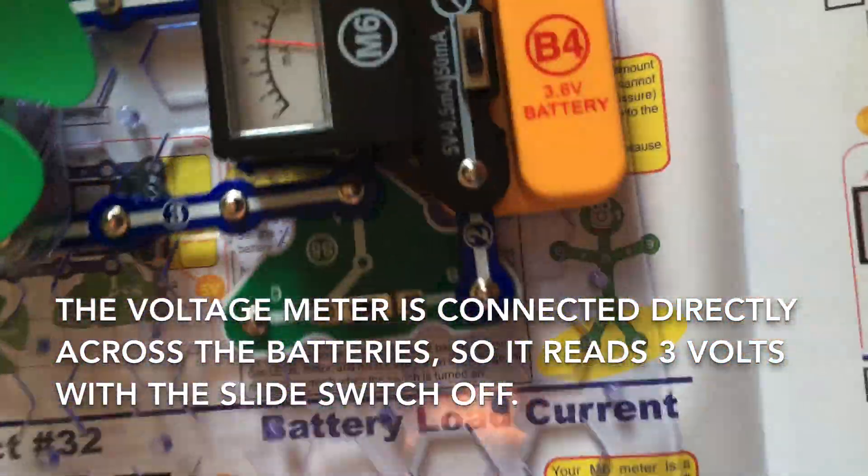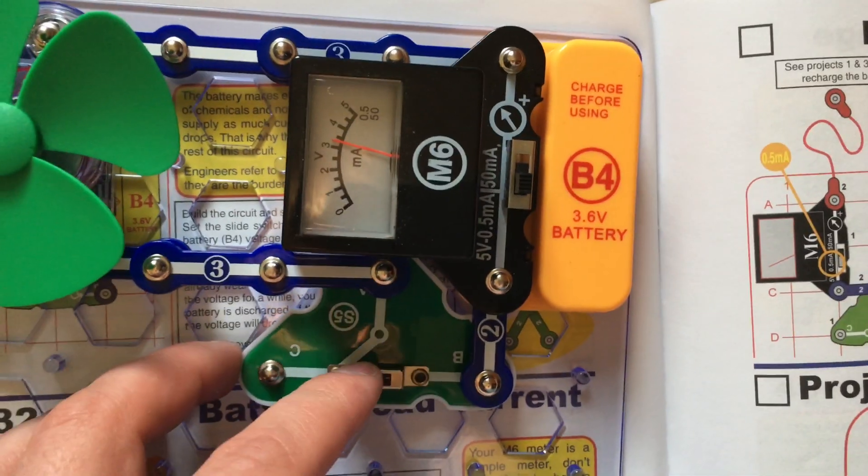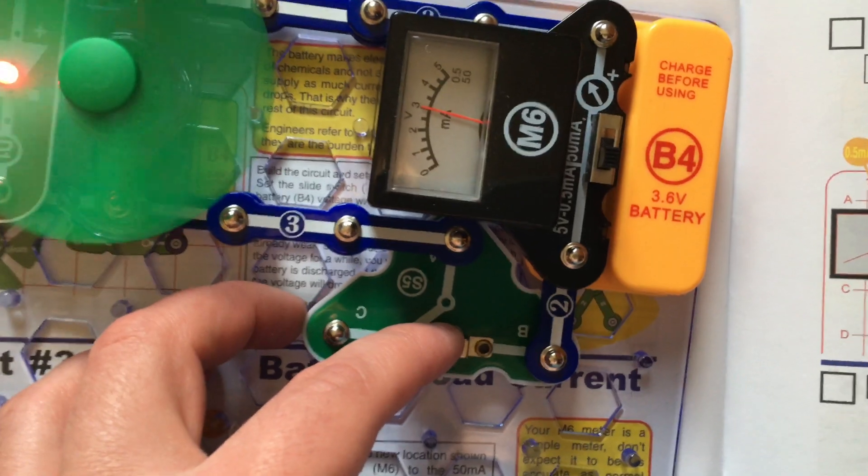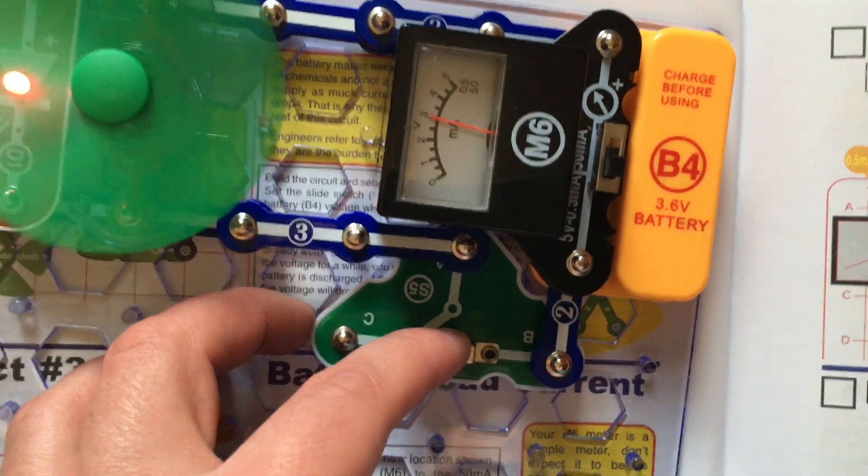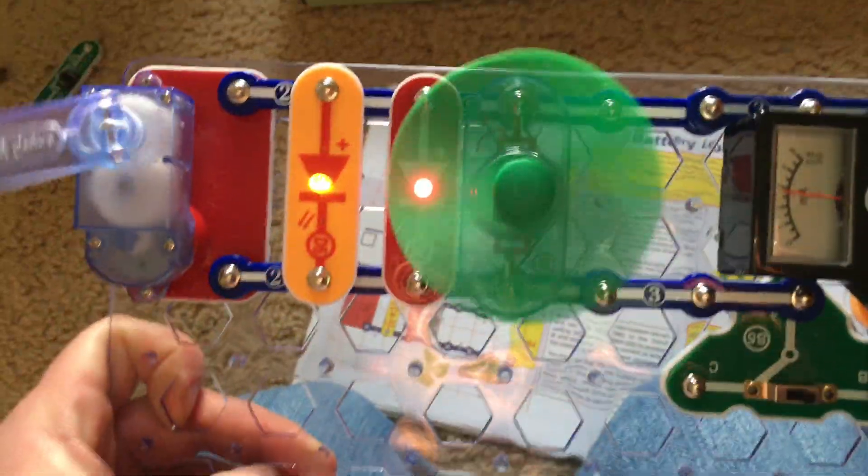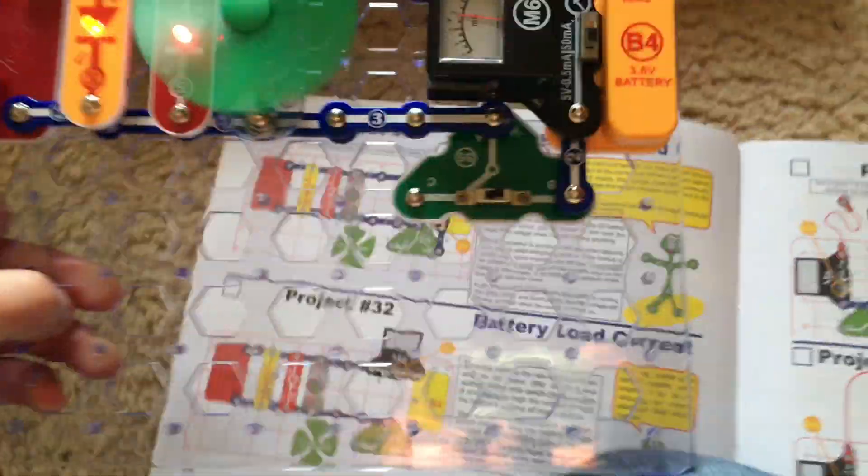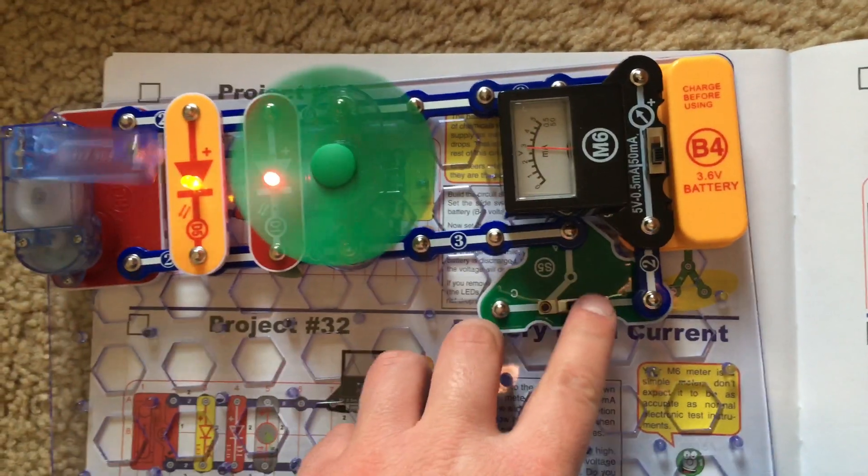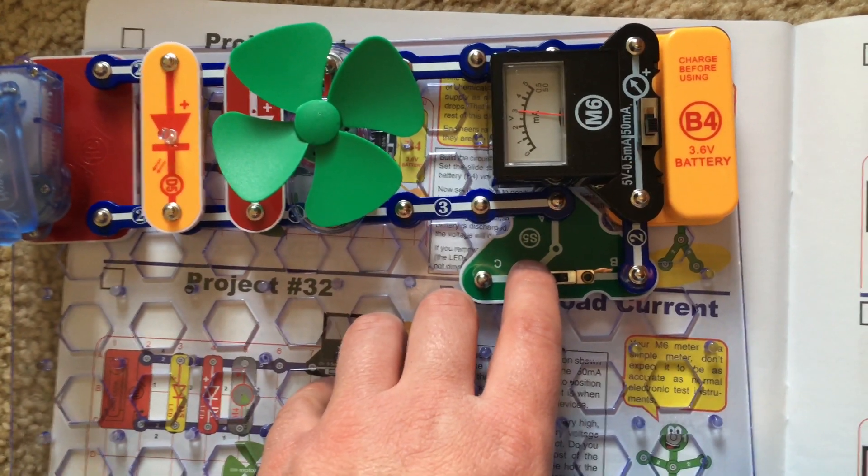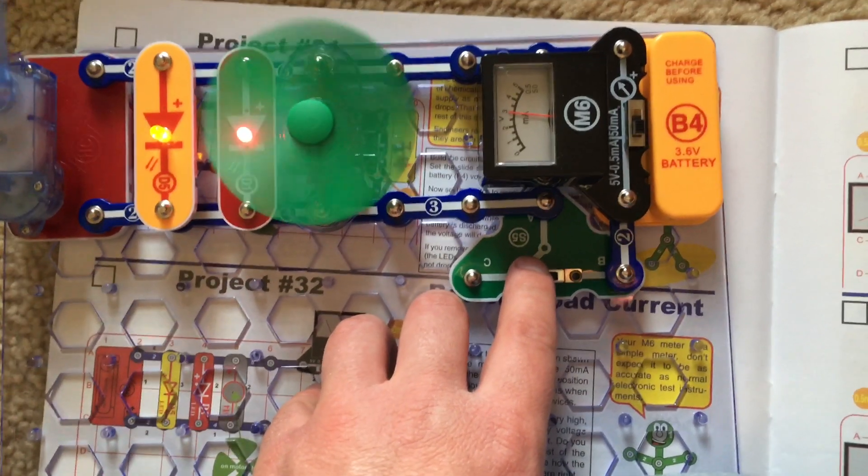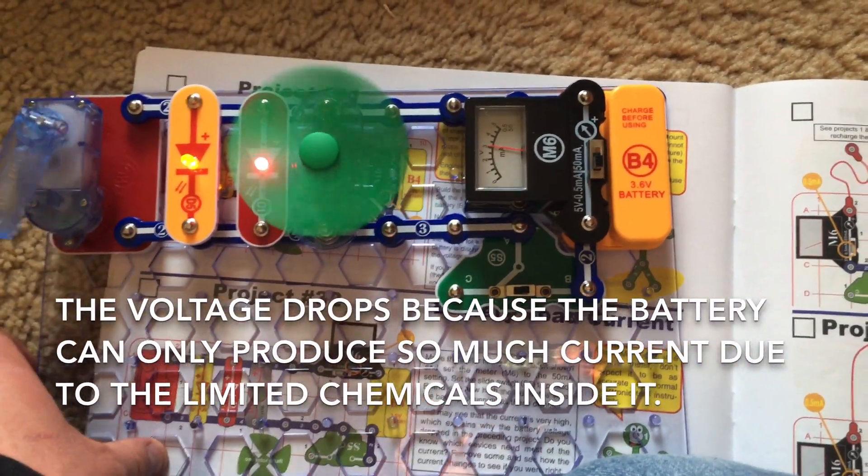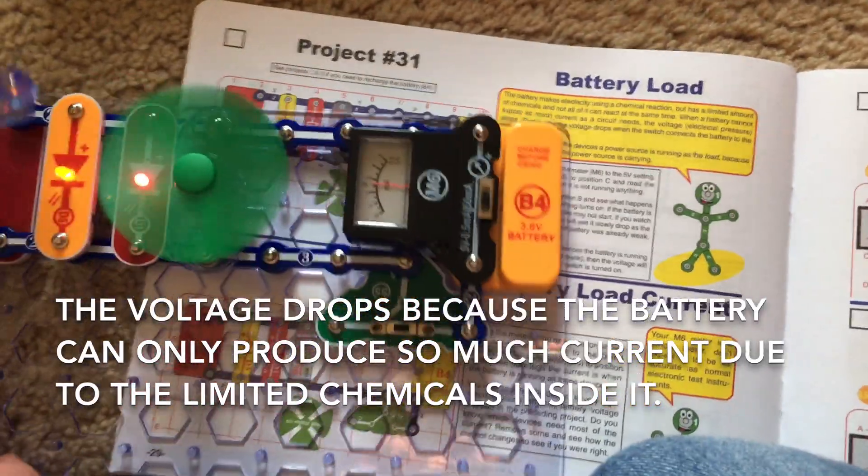Now I'm going to move the slide switch to the B position and note that the voltage drops a little bit. It's now about 3 volts exactly and all four components are in operation. If I turn off the slide switch, the voltage meter stays about the same, but in the beginning it was higher.